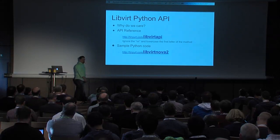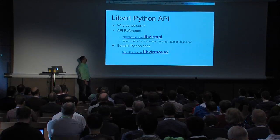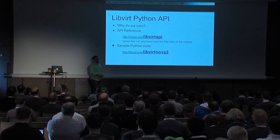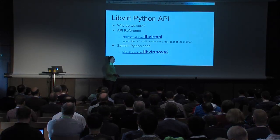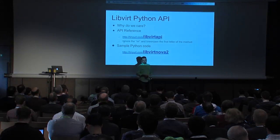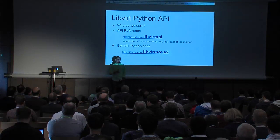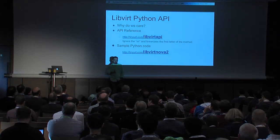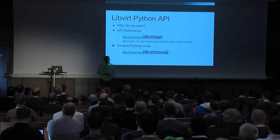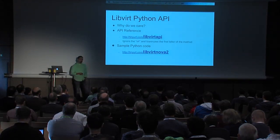First, let's talk about the LibVirt Python API from a code standpoint. It's important to understand how LibVirt is making calls into the API so that you can really read the driver code. The API reference listed is the C library reference. If you eliminate the 'vir' prefix and lowercase the next letter in the call, the Python API is exactly the same as the C API. Going through that reference can give you a good idea of what the capabilities are.